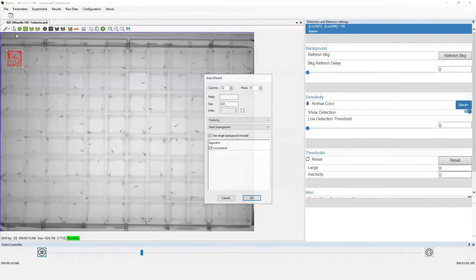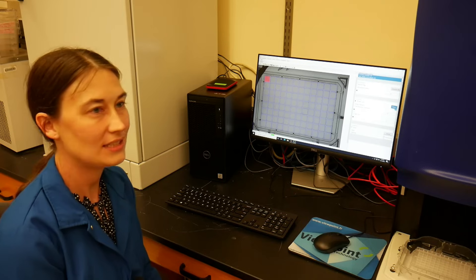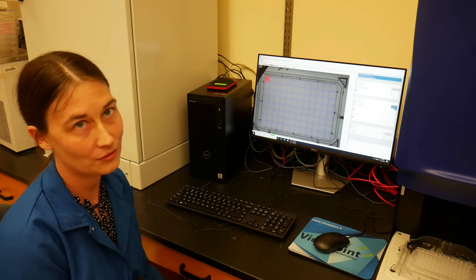Generate a protocol that's 12 columns, 8 rows and follow the instructions. This immediately populates well-drawn boxes, and each of those 96 well plates will track one larva.